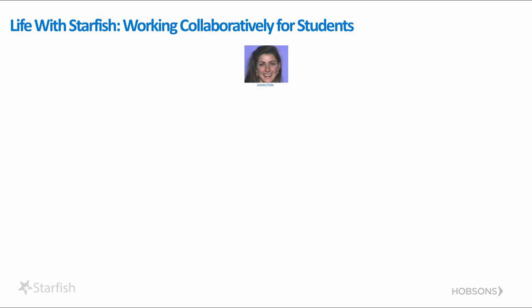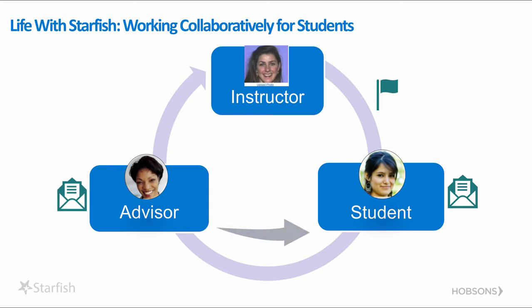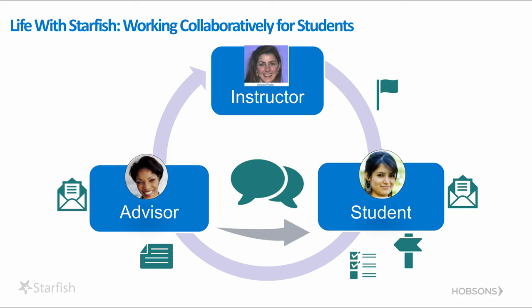Students are most successful when multiple people on campus can collaborate to support them. In Starfish terms, those people become part of a student's success network. For example, Professor Tarras is concerned about her student Rachel, as she hasn't been coming to class. Professor Tarras goes into Starfish and raises an attendance flag for Rachel. This generates notifications to both Rachel and her academic advisor, Yasmin Gold. Yasmin reaches out to Rachel, they discuss her attendance habits, and Yasmin gives her some actions to remedy the issue. Yasmin documents the results of her outreach in Starfish, then clears the flag and closes the loop by informing Professor Tarras of Rachel's intended steps towards addressing the attendance problem.